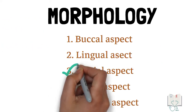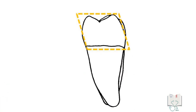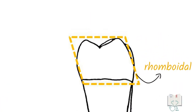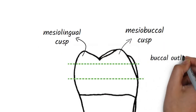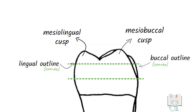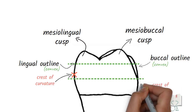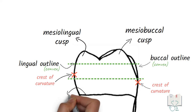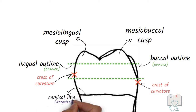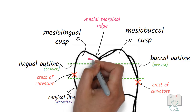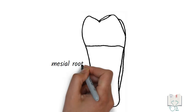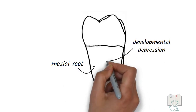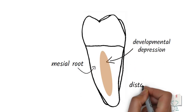Next, the mesial aspect. The outline form of the crown is rhomboidal in shape. Both mesial cusps are seen — mesiobuccal and mesolingual. Both buccal and lingual outlines are convex, with the crest of curvature of the lingual outline in the middle third and the buccal outline in the cervical third because of the cervical ridge. The cervical line is irregular. The mesial marginal ridge runs horizontally between the mesial cusps. The mesial root is seen in front, which is conical in shape and has a developmental depression, while the distal root is seen partially.